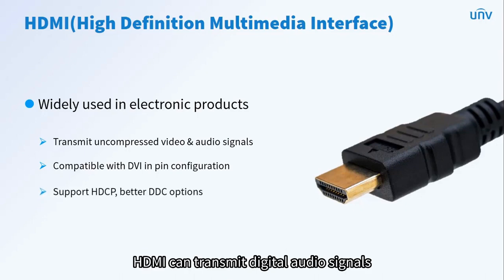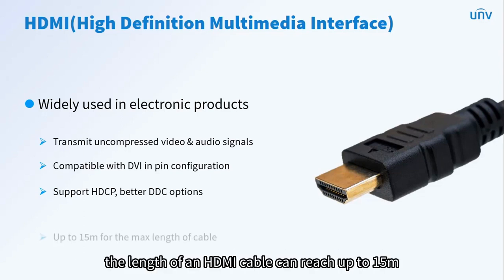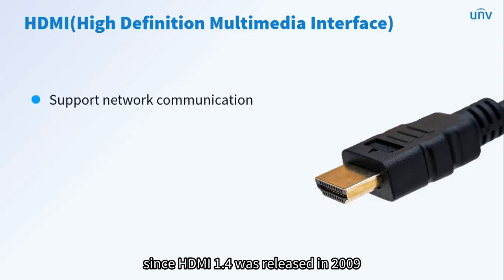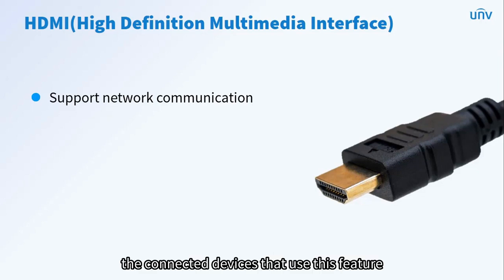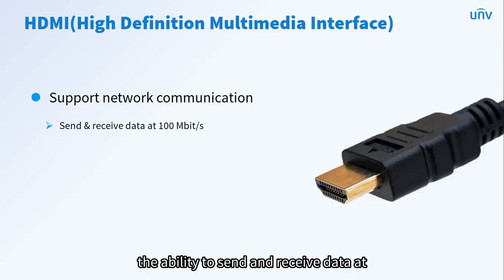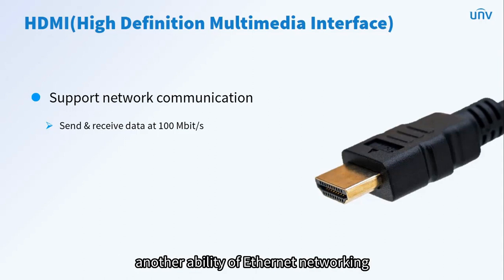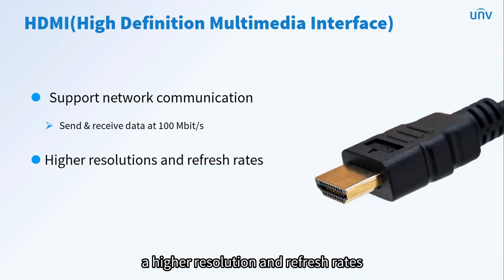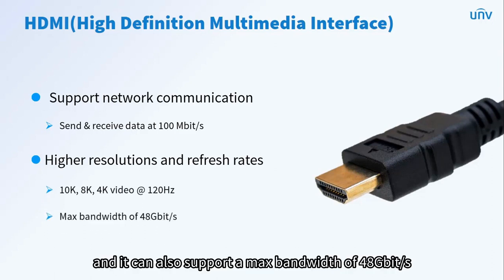Compared to DVI, HDMI can transmit digital audio signals and add support for HDCP while providing better DDC options. The length of an HDMI cable can reach up to 15 meters. Since HDMI 1.4 was released in 2009, HDMI added another channel for data with the capability of network communication. Connected devices using this feature can send and receive data at 100 Mbps Ethernet, so in addition to video and audio, the HDMI cable also enables Ethernet networking. In 2017, HDMI 2.1 was released, adding support for higher resolution and refresh rates, with support for 10K video at 120 Hz and a max bandwidth of 48 Gbps.